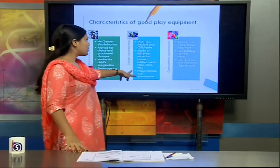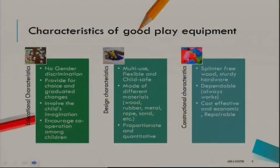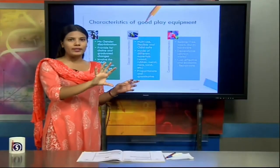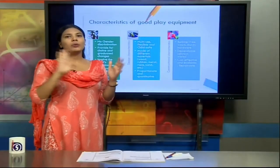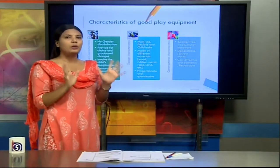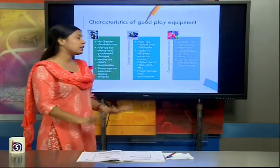Toys should be made of different materials such as wood, rubber, metal, rope, and sand. This enhances the child's tactile senses — their touch sense and identification of different materials. If only plastic toys are given, children will only know that plastic exists. Finally, there needs to be a proportionate ratio — the number of toys should be proportionate to the number of children. Thank you very much; please put any queries in the YouTube comments section.